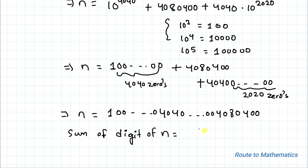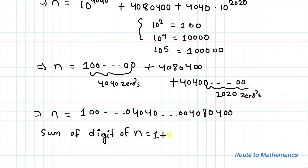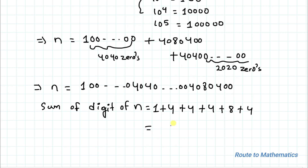To find the sum of digits: zeros contribute nothing, so we add 1 + 4 + 0 + 4 + 0 + 4 + 0 + 8 + 4 + 0 + 0 = 25. The answer is 25. I hope you understood the solution. Thanks for watching — please subscribe and click the bell icon for more interesting videos!